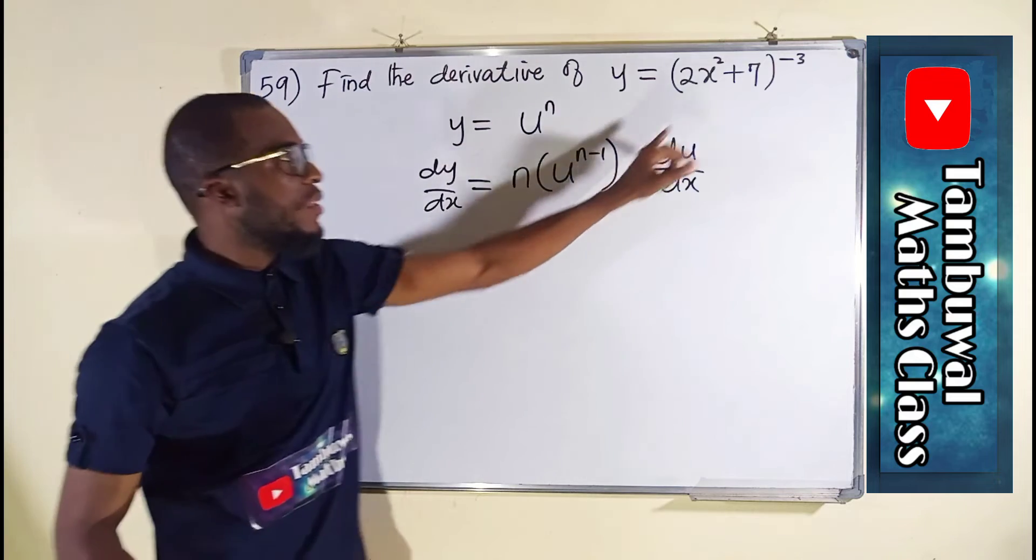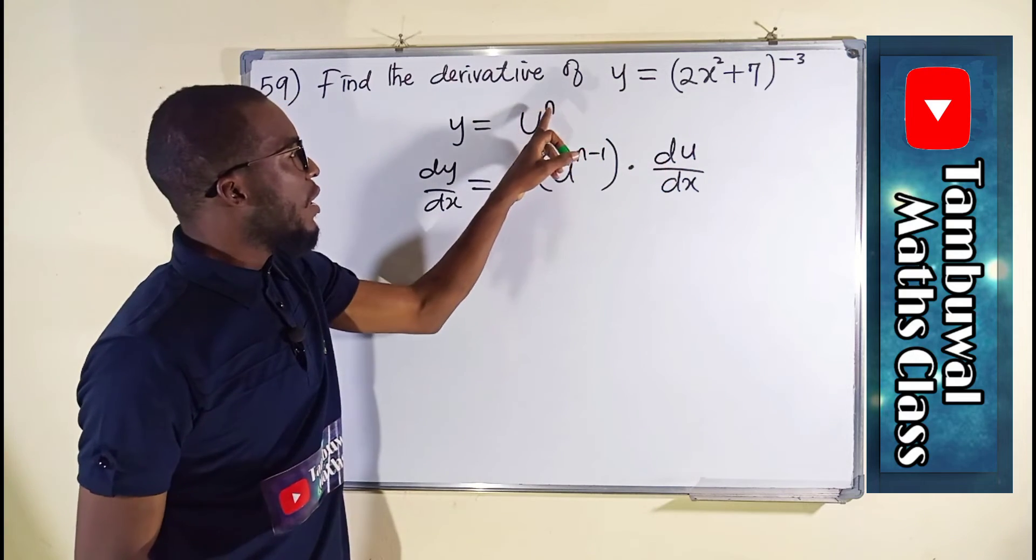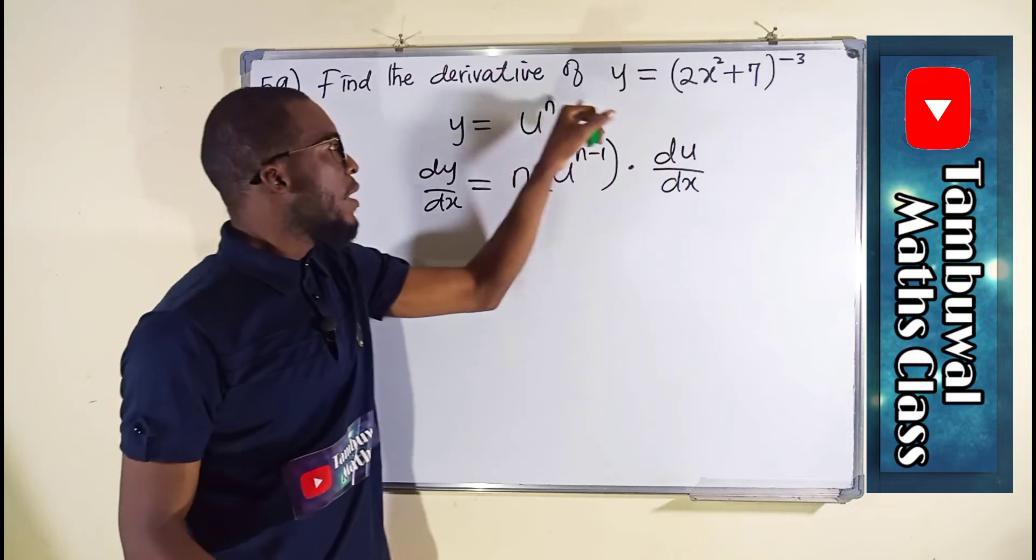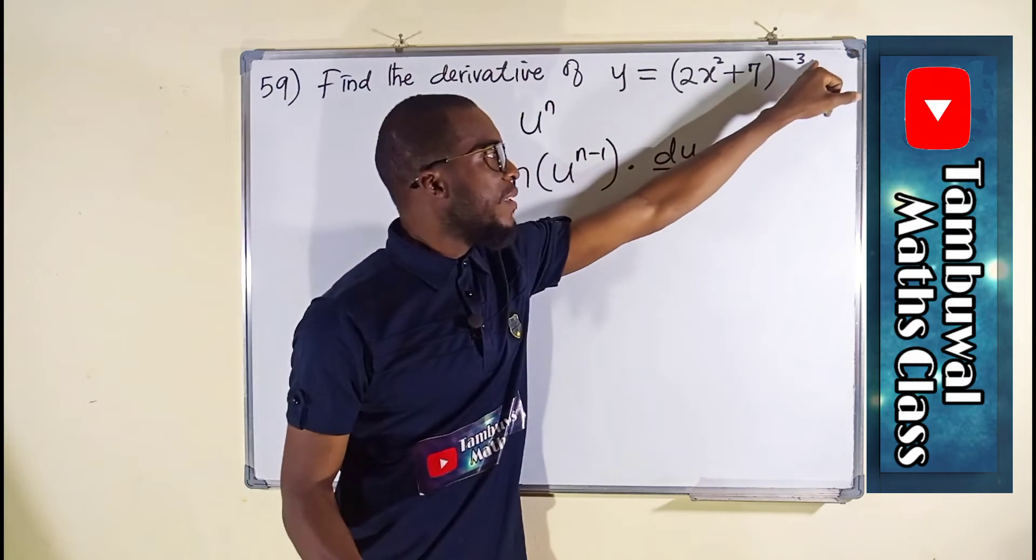And here, if you relate it to this, our u is this 2x squared plus 7, our n is this negative 3.